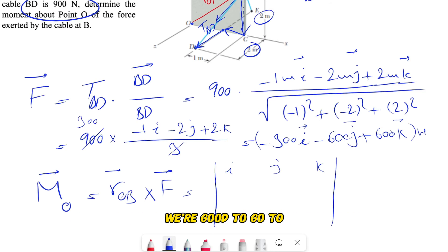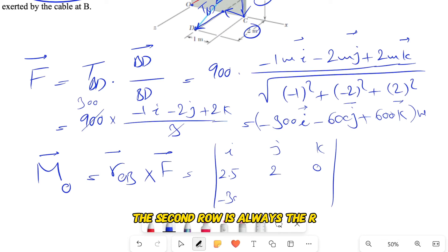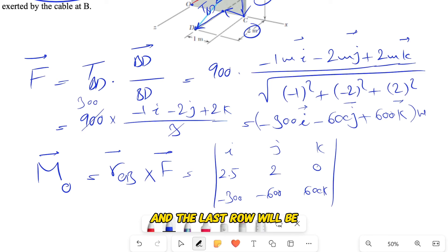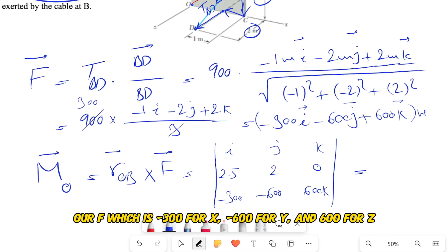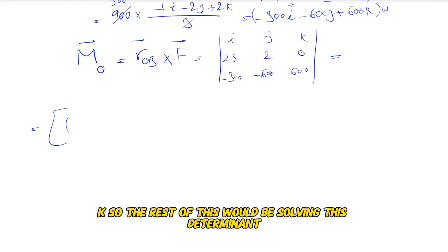Now that we have this, we're good to go with our determinant. We have i, j, k in the first row. The second row is always the r vector, which we found: 2.5, 2, and 0 for k. The last row will be our F, which is -300 for i, -600 for j, and 600 for k.